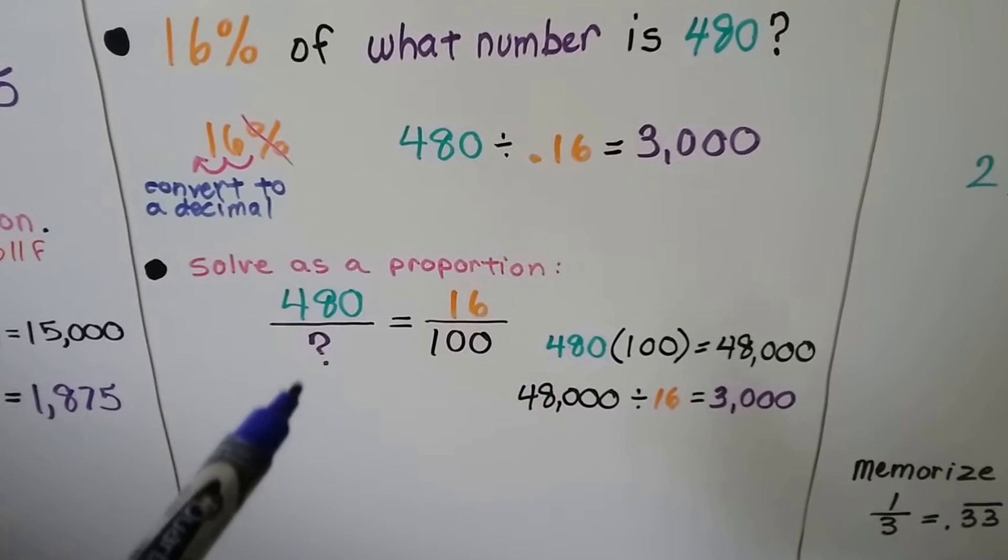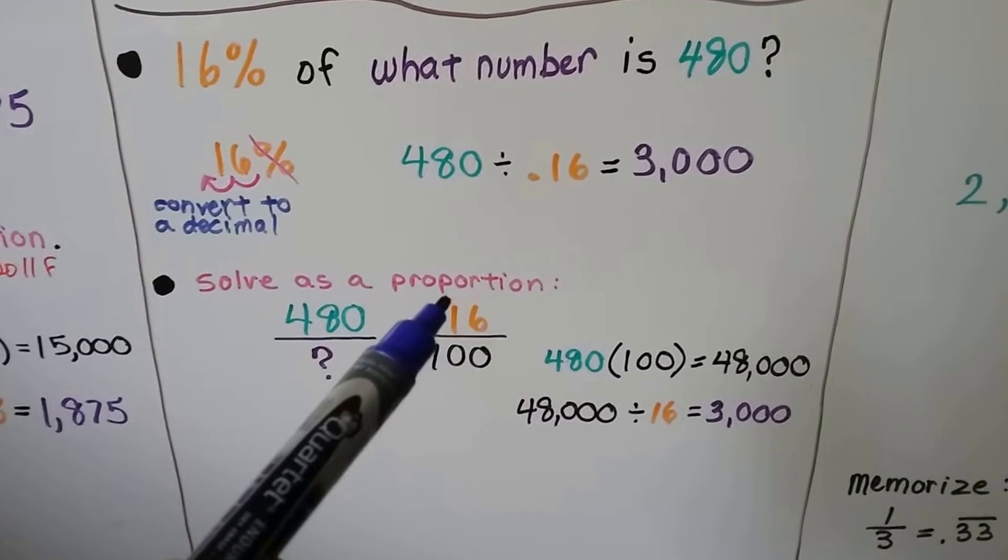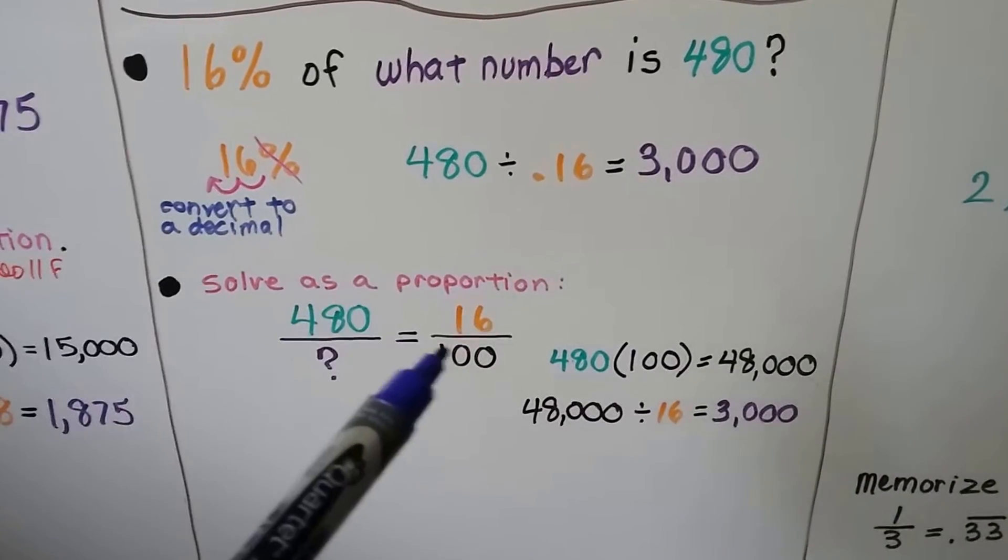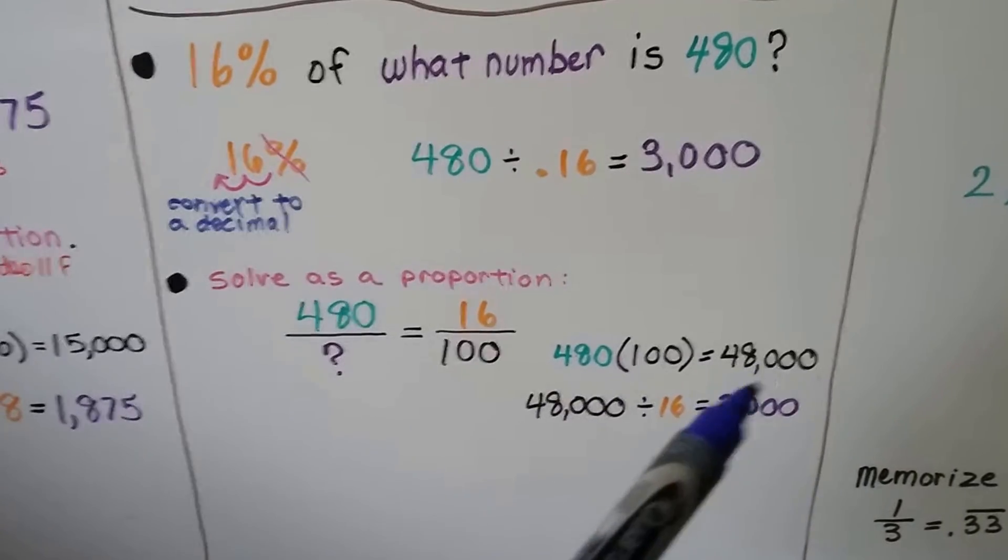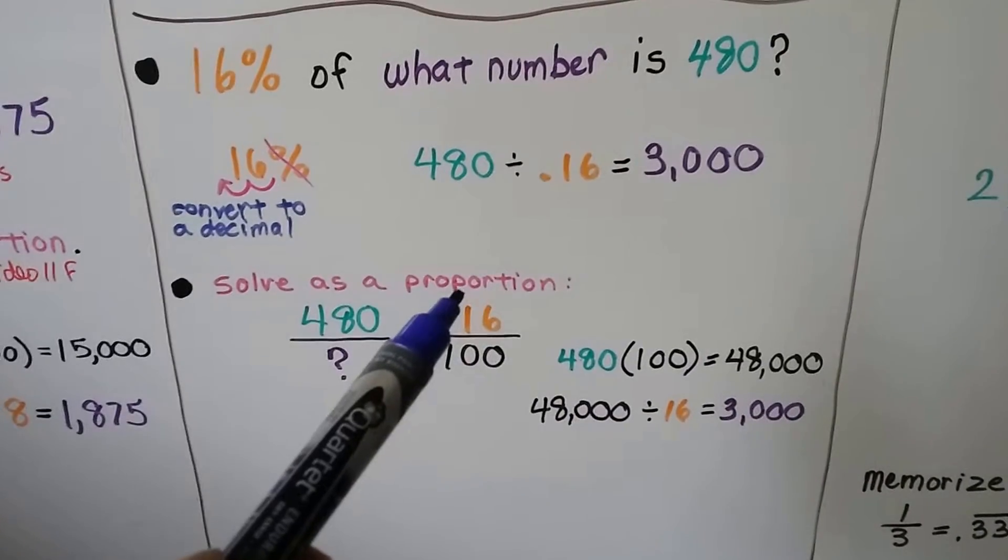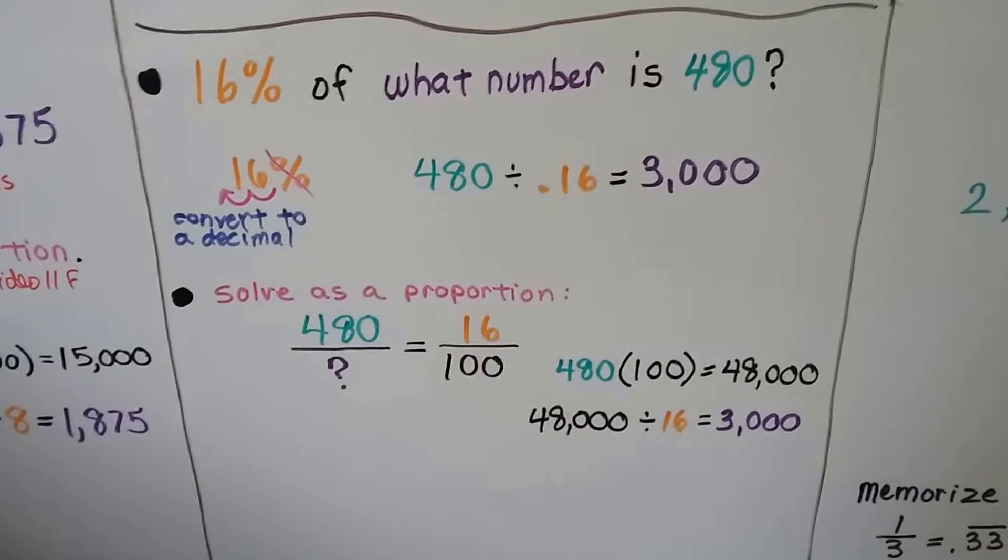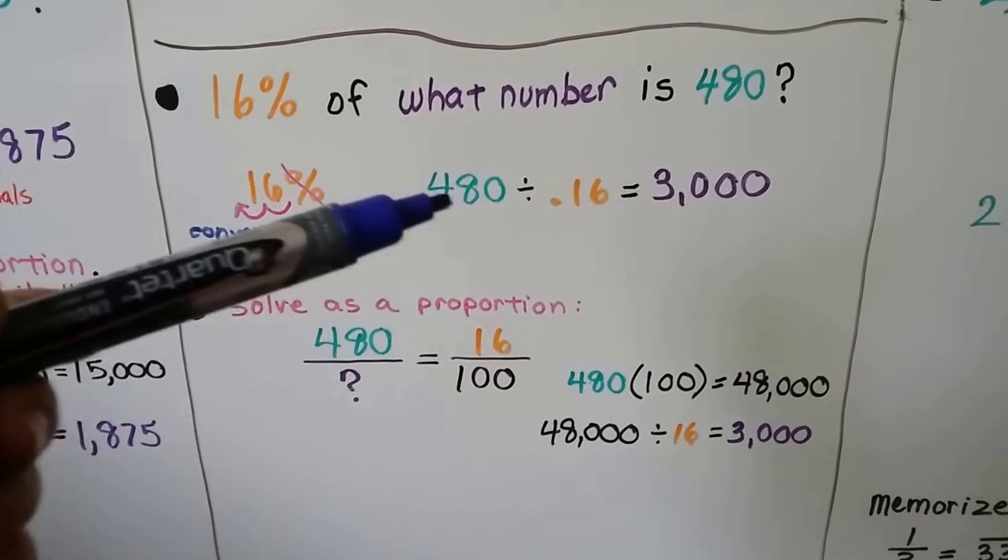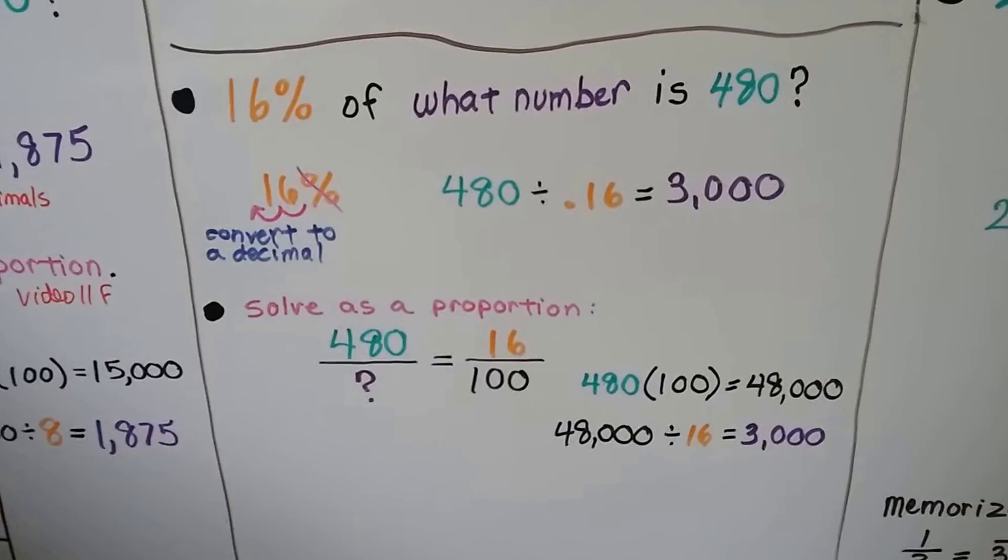As a proportion, we can solve it doing the 480 as the part, the 16 as the percent, and we're looking for the base here. We do 480 times 100 cross multiplying down here. We get 48,000. We divide it by the third number, the 16, and we get 3,000. Same answer. So it can be answered either this way by dividing and doing part divided by rate, or we can do it this way as a proportion.